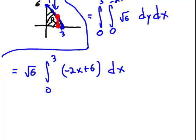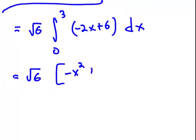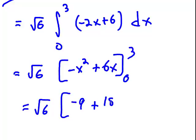And then evaluate the remaining integral. Get the square root of 6. What do we have? We'll have, let's see, just negative x squared plus 6x, evaluated from 0 to 3,